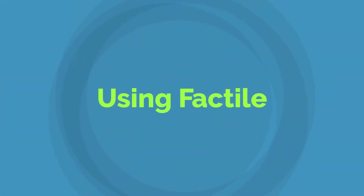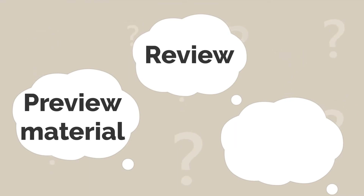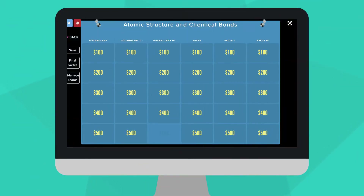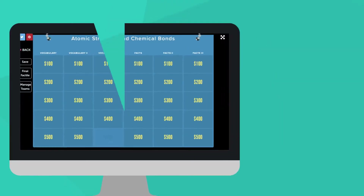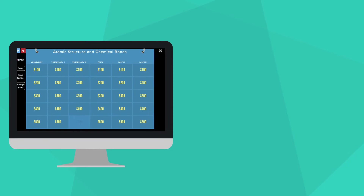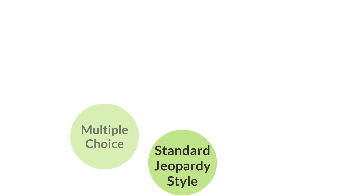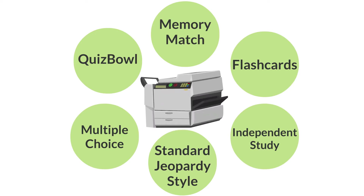Are you looking for a way to preview new material, review content at the end of a chapter, or test your students' progress? Factile can help you do it all. Integrate Factile into any stage of your lesson. Create a set of questions and answers once, and use them in six different ways: as a standard Jeopardy-style game, as a multiple-choice activity, in quiz bowl format, like a memory match game, as flash cards, or in an independent study Jeopardy-style game with analytics.